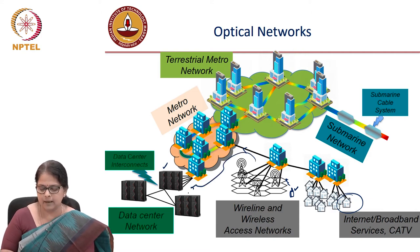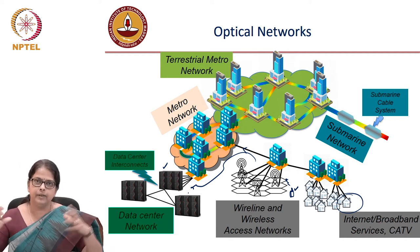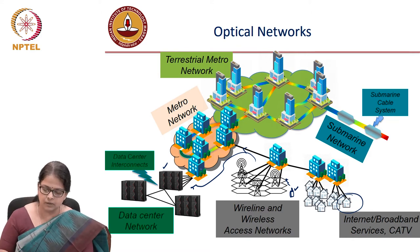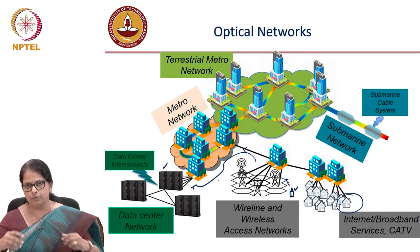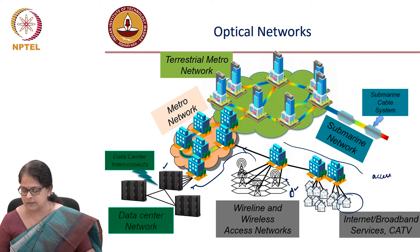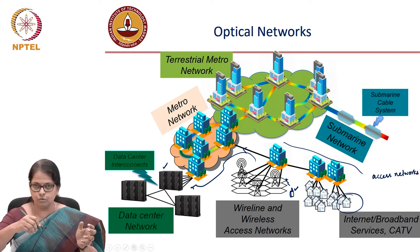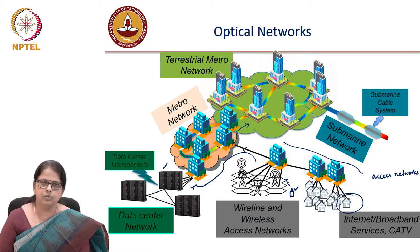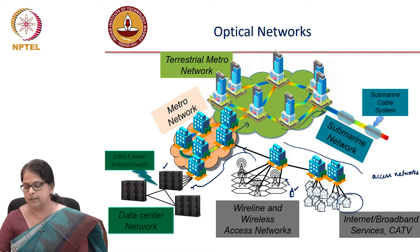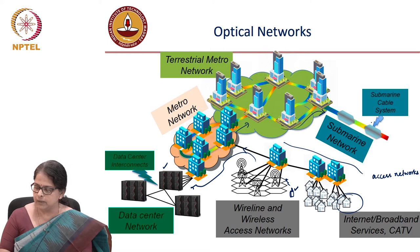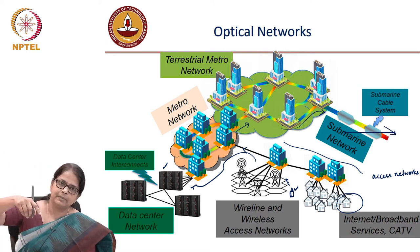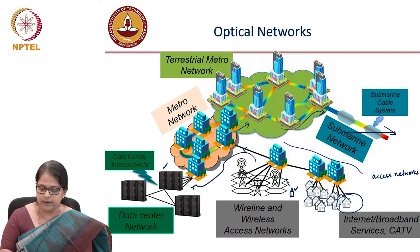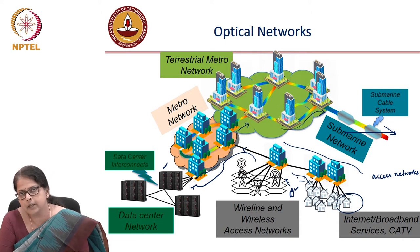You would need to establish a path, and depending on the geography of the connectivity, you could go through a metro network, which is an aggregation of access networks. These last-mile networks are called access networks. You could connect to a metro network and there could be a larger terrestrial metro network. If you want connectivity with another continent, your data has to find its way to the nearest submarine landing station, through the submarine cabling system, back to the landing station of the destination continent, and through the metro and access network.